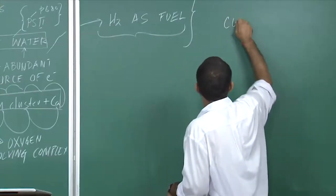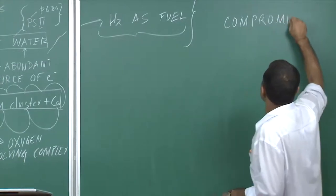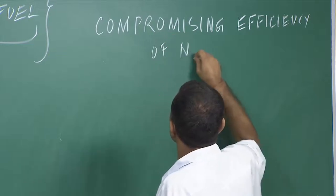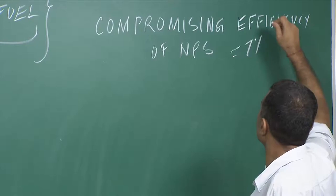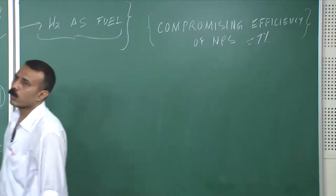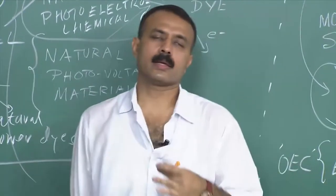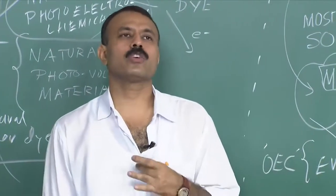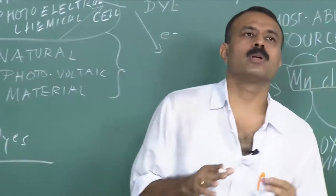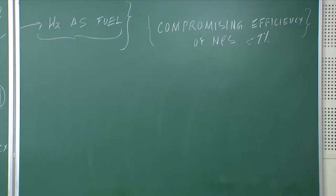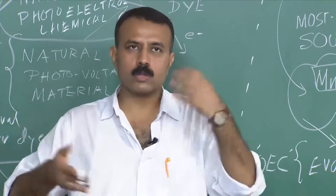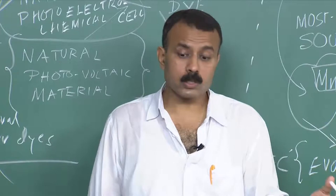In the previous lecture, I was telling you about the efficiency of natural photosynthesis — approximately 7%. The reason is that in those thylakoid complexes, when chlorophylls are getting excited and oxidized and ejecting electrons, a lot of free radicals are formed. In order to prevent free radical damage, this process is slowed down. That 7% efficiency exists to ensure that the free radicals formed do not damage the system, causing it to age faster. That could be one of the possible reasons.